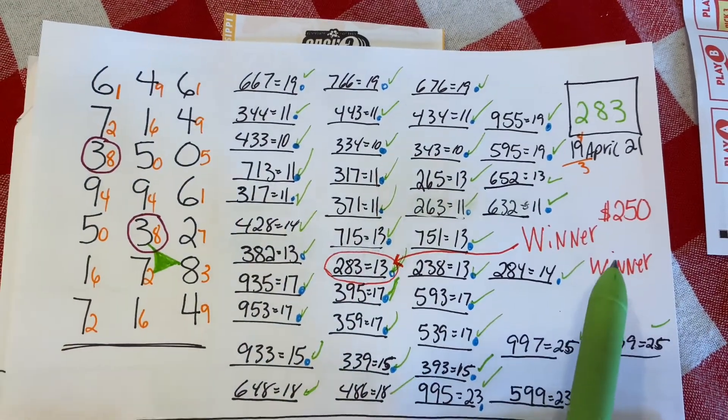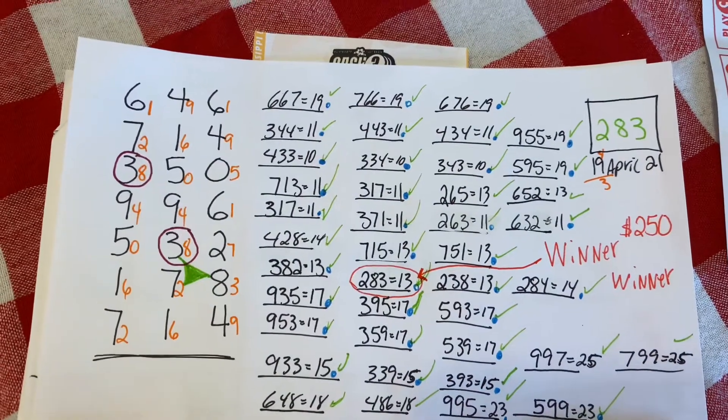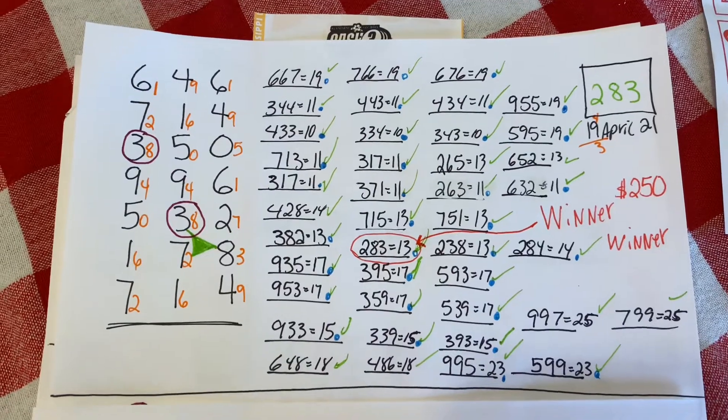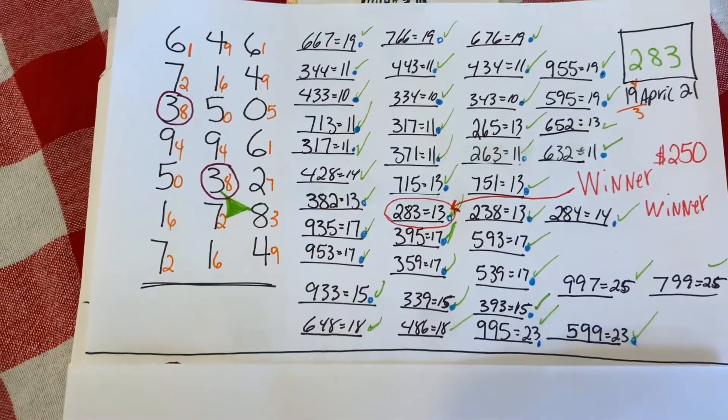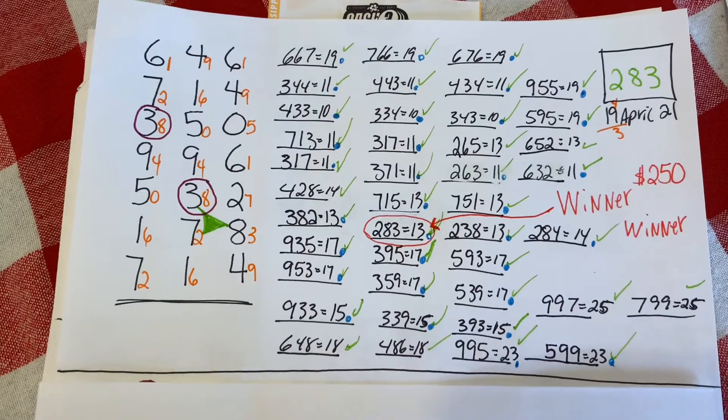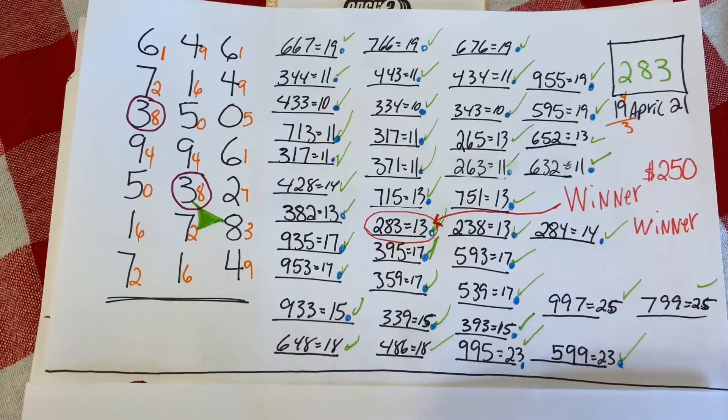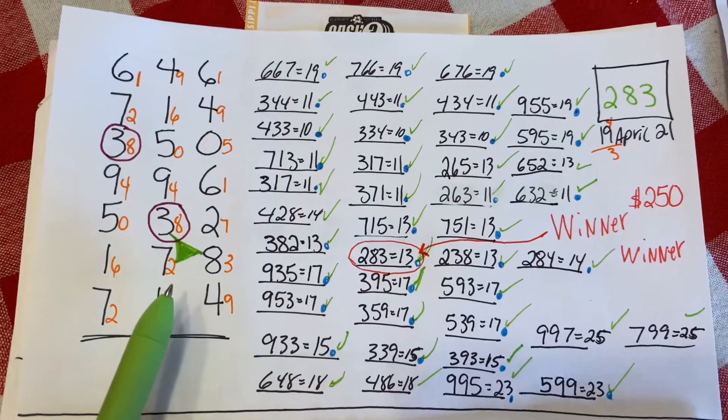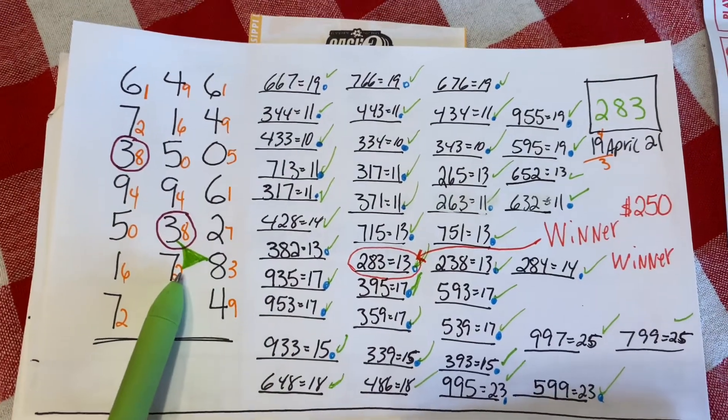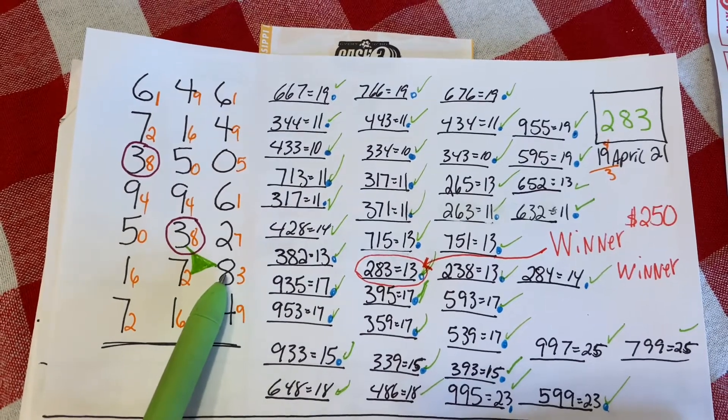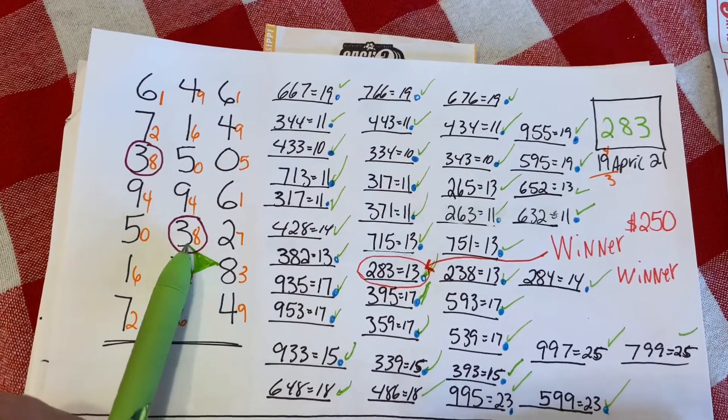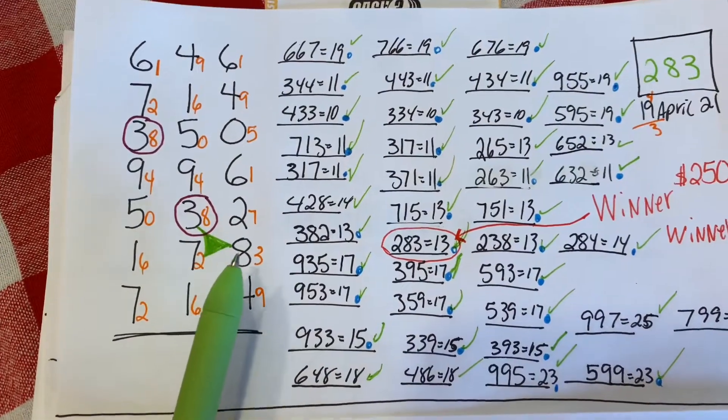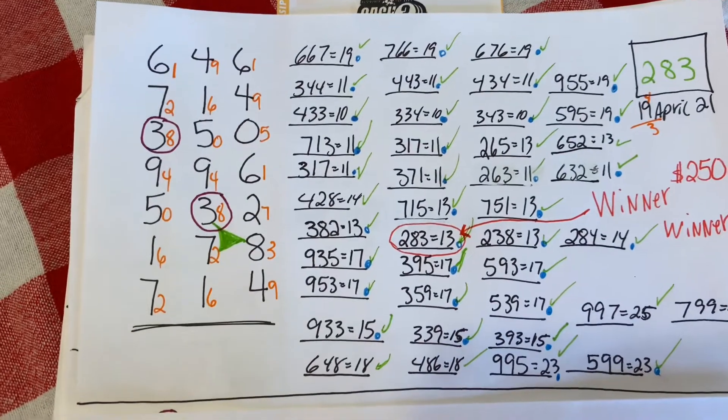I won 250 bucks off of that. It would have been nice to have won more but I'll take 250 bucks any day. This just kind of proves that this 646 rundown really works. I'll show you right here how the numbers are connecting. The numbers are mirror number two and then we have an eight non-mirror and a number three.